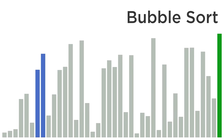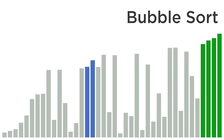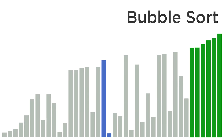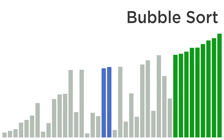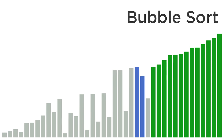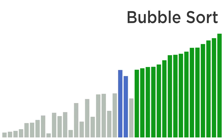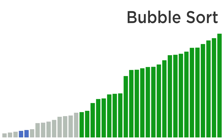Meanwhile, bubble sort works a little bit differently. It also makes passes through the array, but it compares two values at a time. It looks at every pair of values and tries to determine whether that pair of numbers is in the correct order — that is to say, if you're trying to sort from smallest to largest, making sure that for any pair of two numbers, the smaller number is to the left of the larger number. If it finds two numbers that are out of order, then it swaps them. Bubble sort will continually go through this process of considering pairs of values and swapping them, if necessary, until it gets to the end of the array.